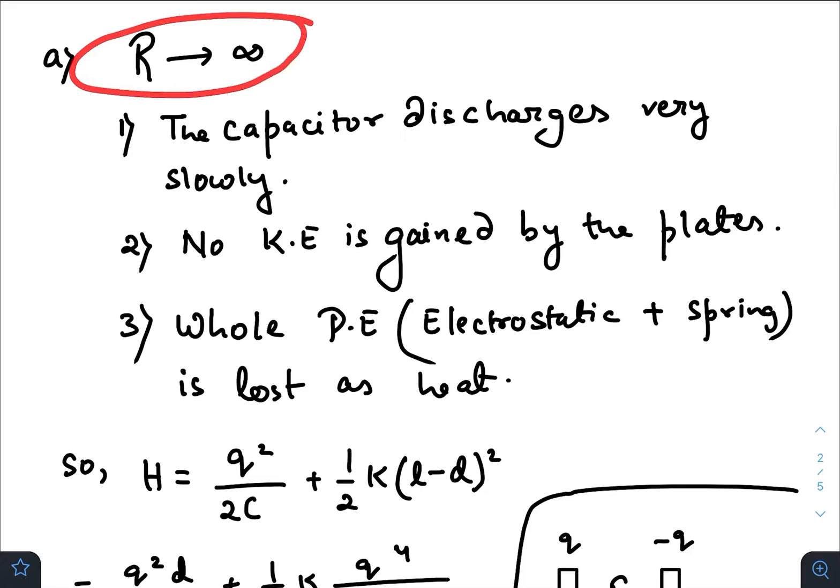When R is very large, that is R tends to infinity, the capacitor discharges very slowly due to very high time constant. It would be so slow that the plates won't gain any kinetic energy. So the whole potential energy - that is the electrostatic potential energy and the spring potential energy - will be lost as heat. The spring will elongate very slowly to its natural length. So the initial spring potential energy and the electrostatic energy that was stored within the capacitor will be totally lost across the resistance.